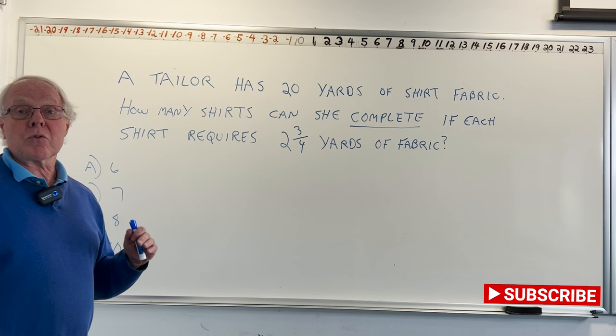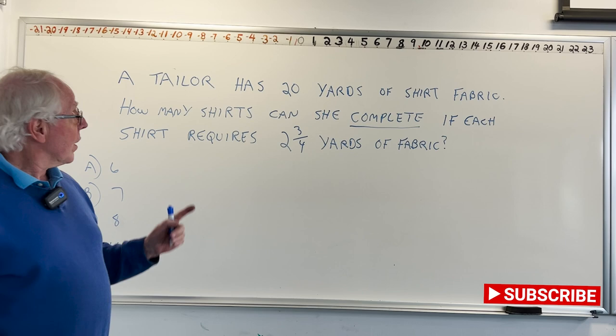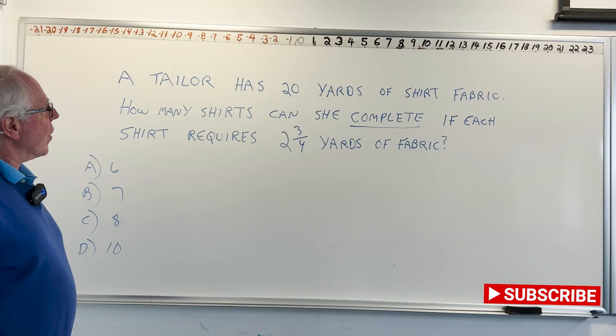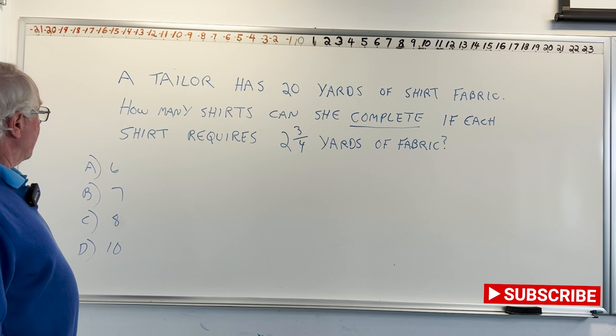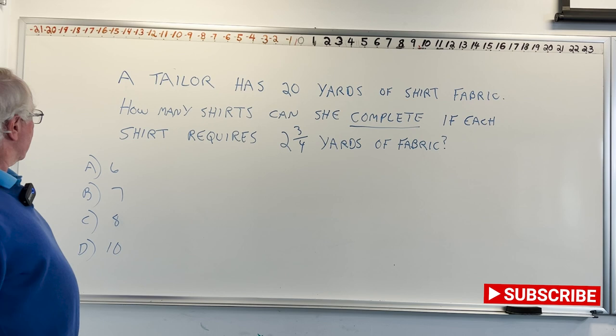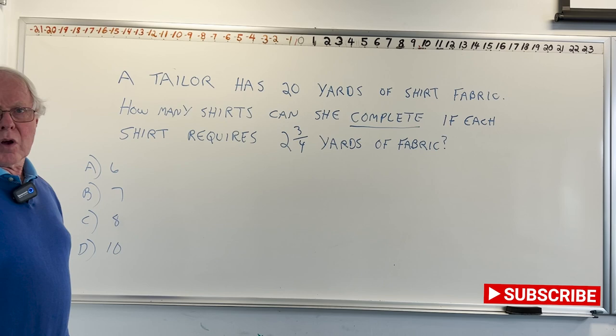When we did multiplication problems, they were all multiplication problems, so you knew it was multiplication. Then we did a whole bunch of division problems, they were all division problems. This problem we're going to have to figure out what we're doing. So here's the problem: a tailor has 30 yards of shirt fabric. How many shirts can she complete if each shirt requires 2¾ yards of fabric? So the first thing to decide, there's only two numbers in this problem, 30 and 2¾, is what we're going to do with those two numbers.